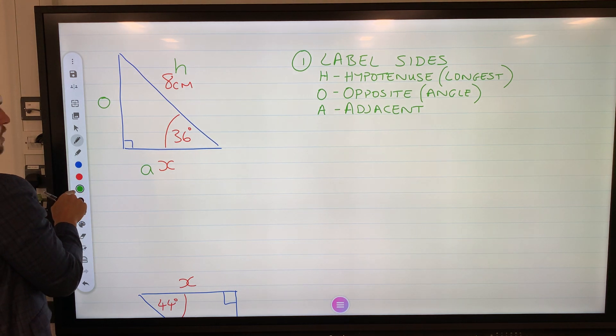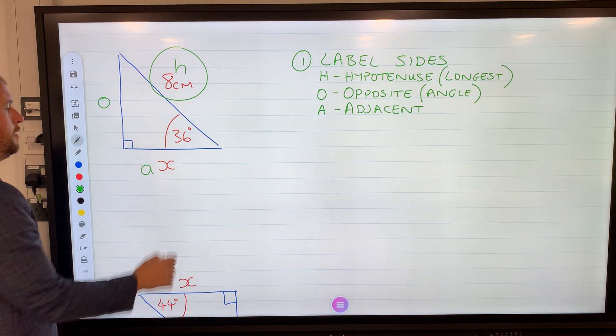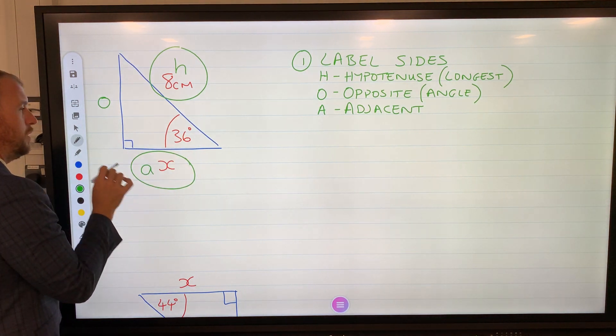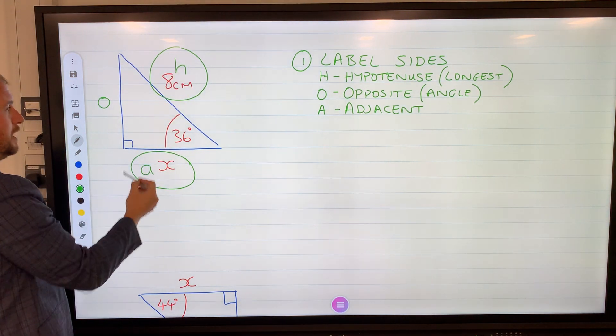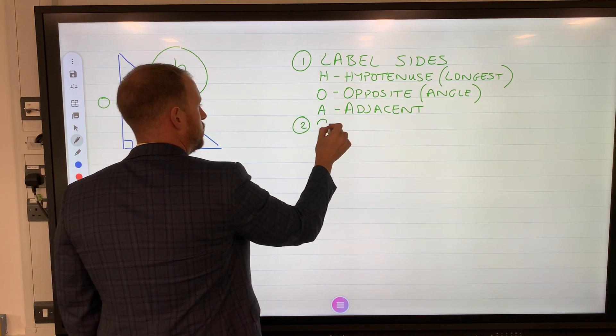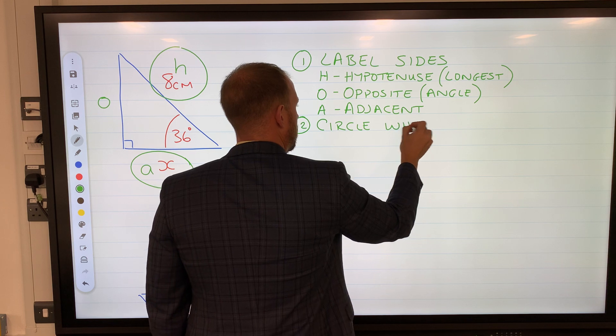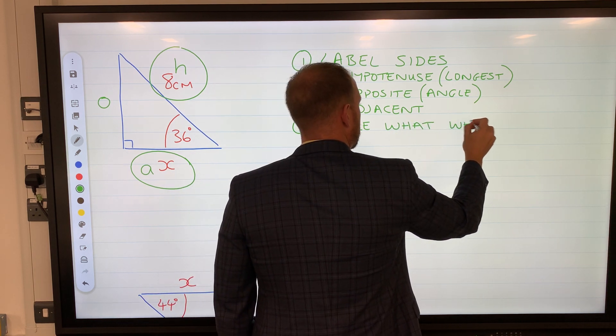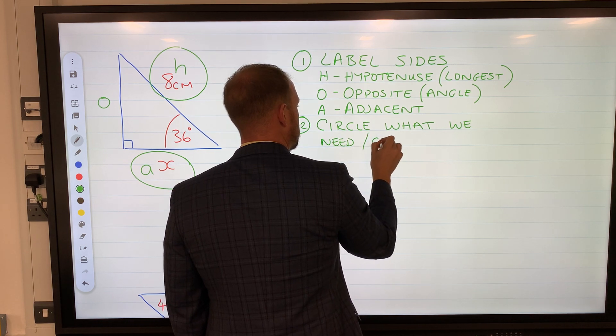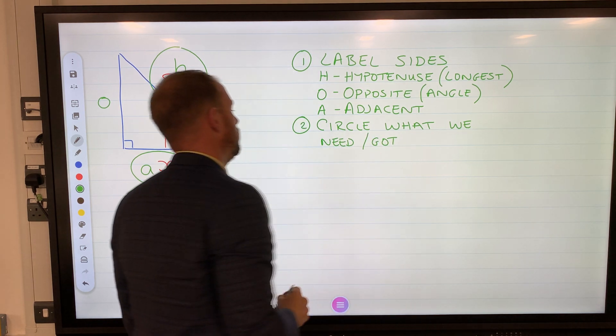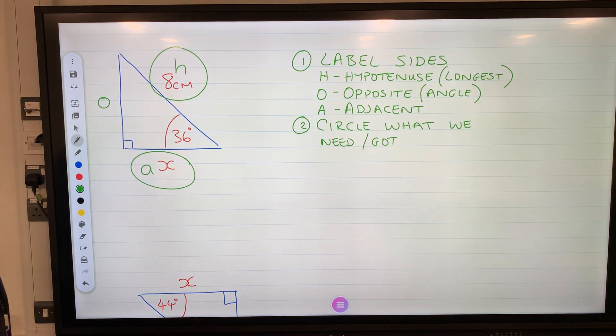Right, now that I've got those labeled, I now need to circle what I've been given. I've been given a value for the hypotenuse, but I need to work out the adjacent. So I circle what I've been given, what I've got, and circle what I need. So circle what we need. So that's what we've got - we've got a H value of eight and we need the adjacent value.